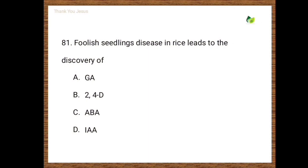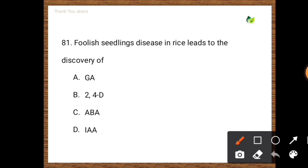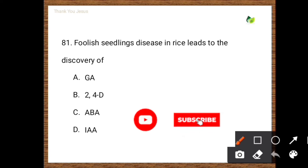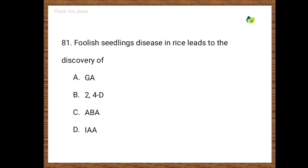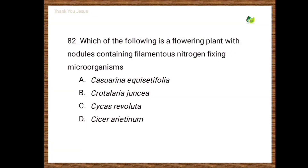Next question: The foolish seedling disease in rice seedlings led to the discovery of — options are GA (gibberellic acid), 2,4-D (a type of auxin), ABA (abscisic acid), IAA (a type of auxin). The correct answer is gibberellic acid.